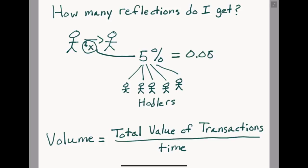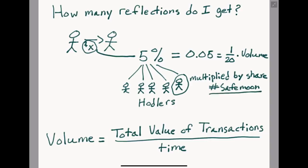So, 5% or 1/20th of our volume is split up for all the holders. The amount of reflections one specific holder will gain will be this result multiplied by your market share, how many Safemoon you own relative to the total number of Safemoon that exists. In our case, this is 1 quadrillion.